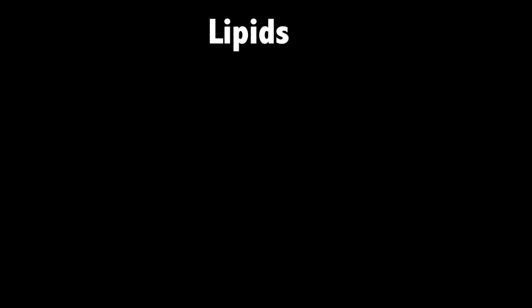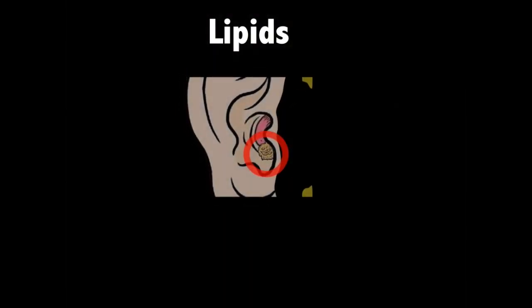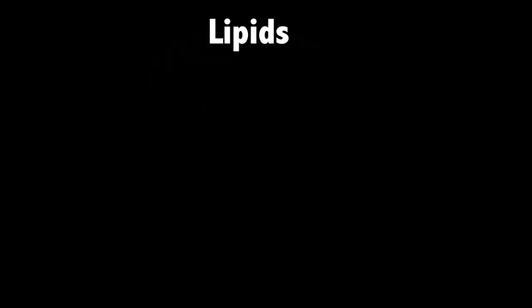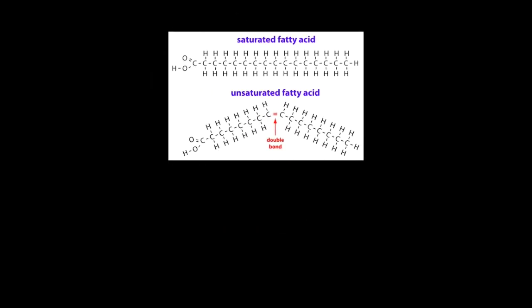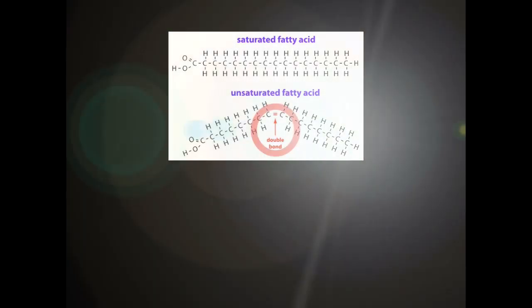You can find starches in foods such as bread, cereal, pasta, rice, potatoes, beans, and chestnuts. Carbohydrates provide your body with energy. The chemical energy in sugars is the main source of energy for most living things.